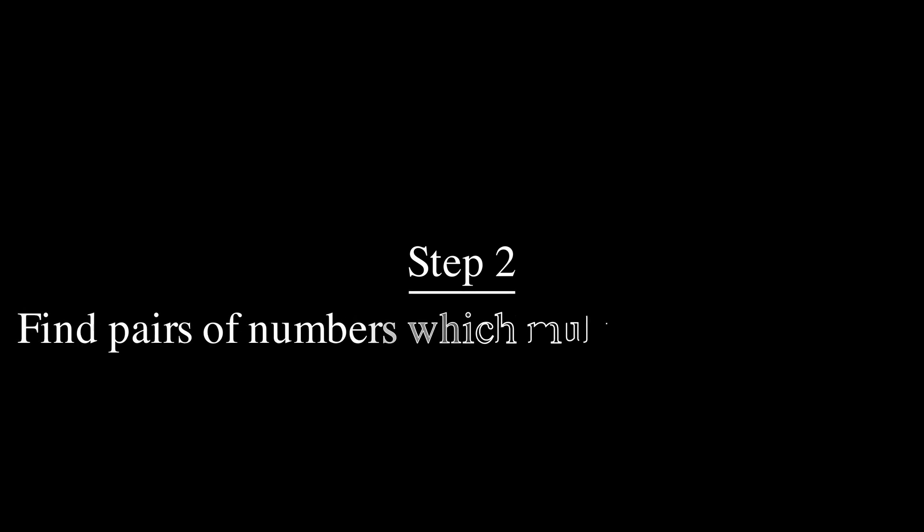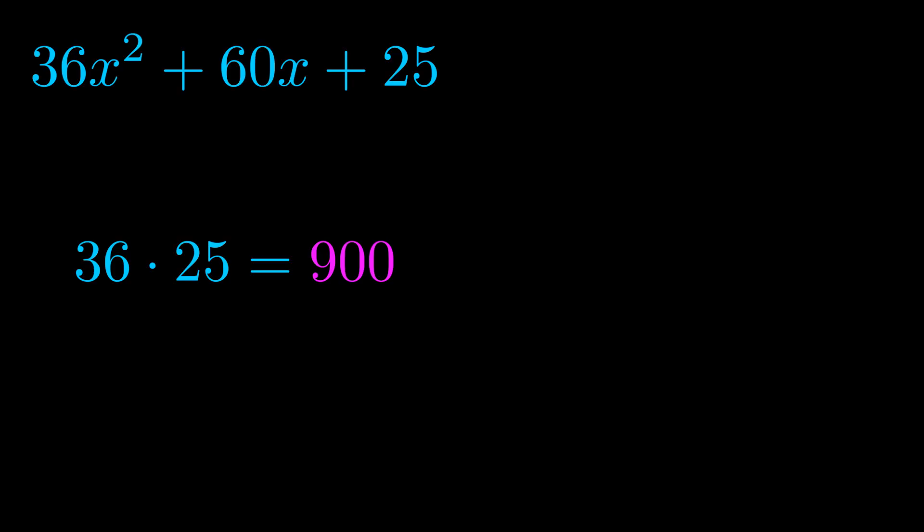Step two is to try to find all of the pairs which multiply to this number. Now it turns out you don't really need to find all of them, but go ahead and write down as many numbers as you can that multiply to the magenta value for now.